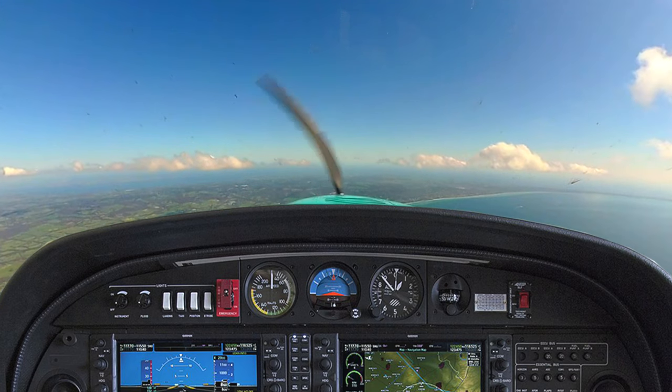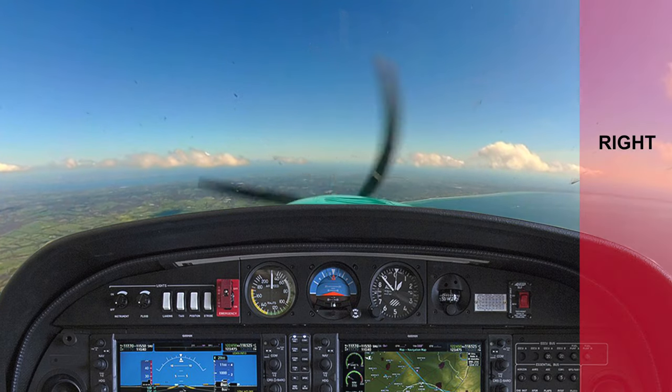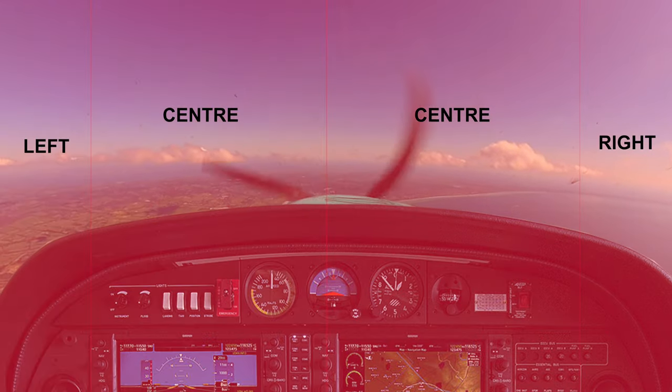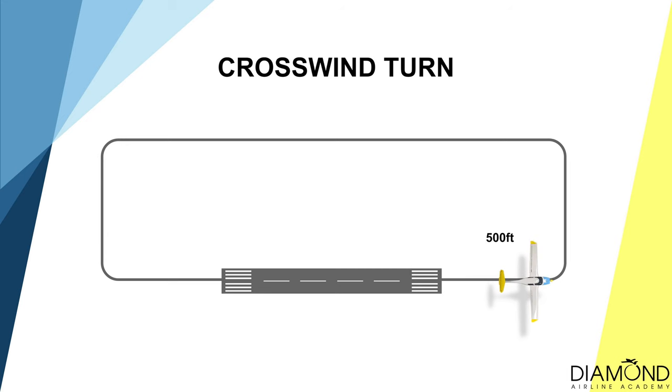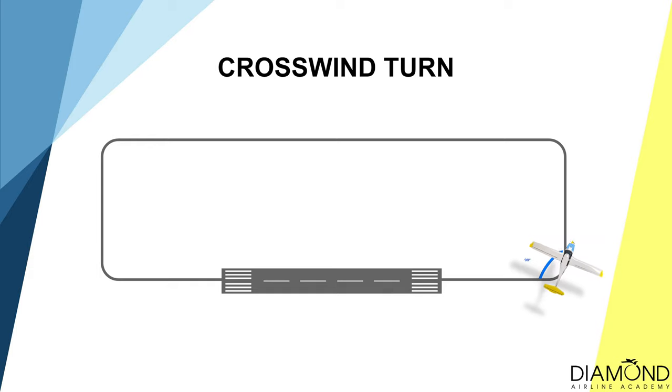If we're doing a left-hand circuit, clear right, centre, left. After ensuring there is no traffic within the vicinity, conduct a climbing turn onto crosswind. After turning onto crosswind, it is important to ensure the tracking is perpendicular to the upwind track. Because the circuit is supposed to be rectangular, all turns should be at a right angle.